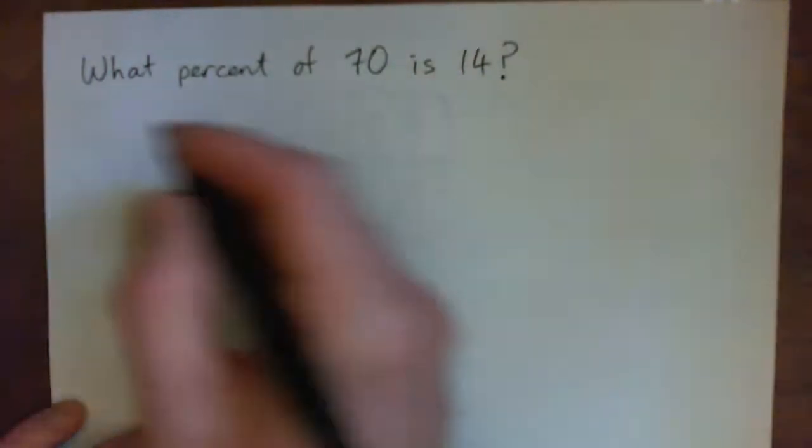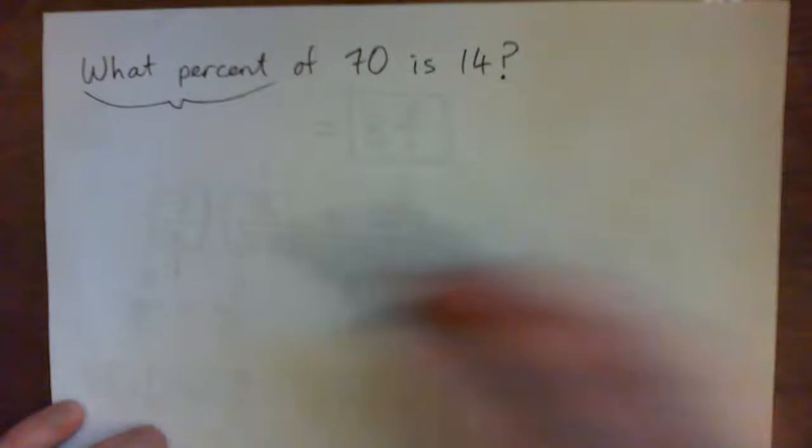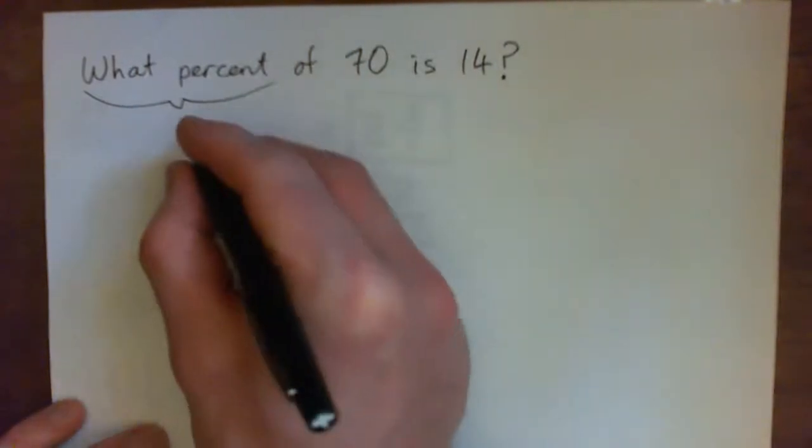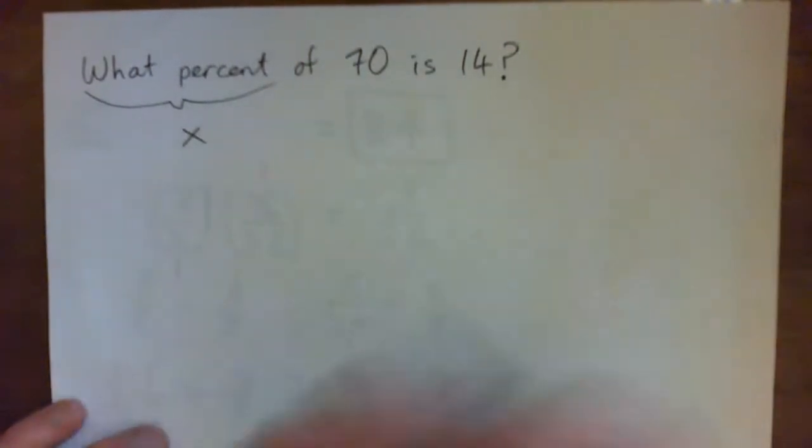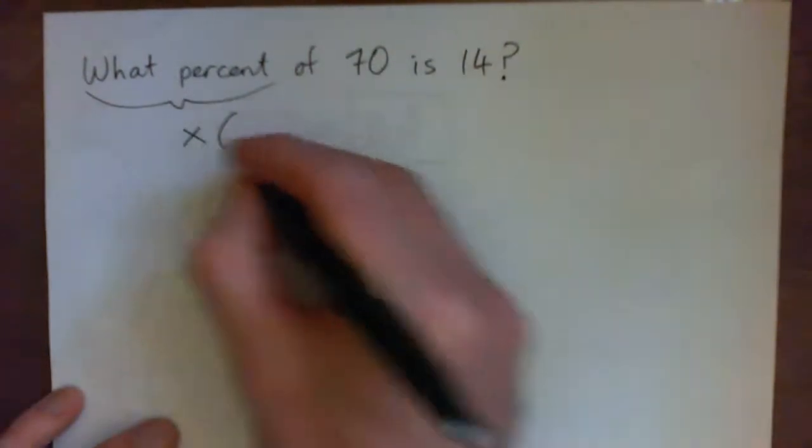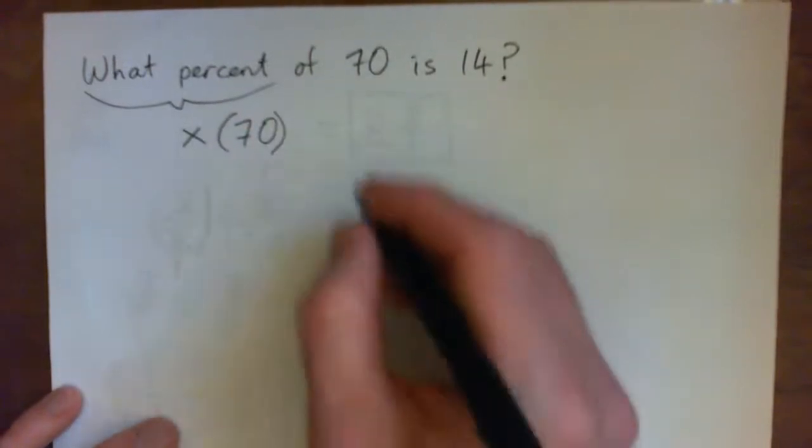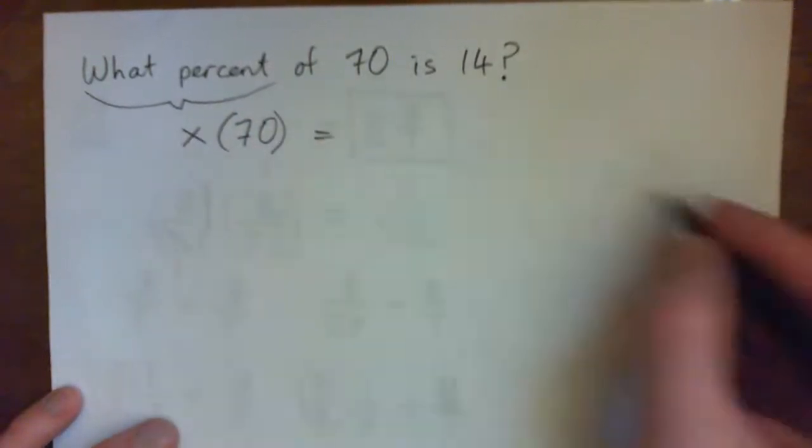Let's turn it into an equation. What percent, we'll call it x. That's the unknown number. Of means multiply, so times. Of 70, times 70, is equals 14.